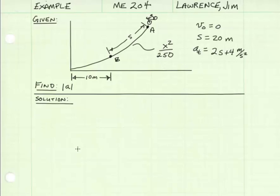In this example, we have a bicyclist traveling down a hill whose curve can be represented as x squared divided by 250. He starts at an initial speed of 0 meters per second, his initial position is also at 0, and he travels down the slope a distance of 20 meters. As he goes down the slope, his acceleration is represented by the function 2s plus 4 meters per second squared. We want to find the magnitude of the acceleration of the bicyclist at point B, which is 10 meters in the x direction away from the origin.